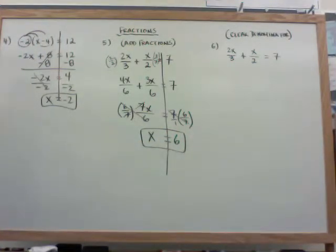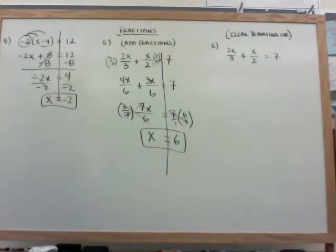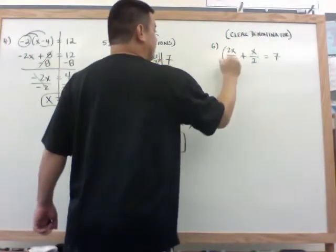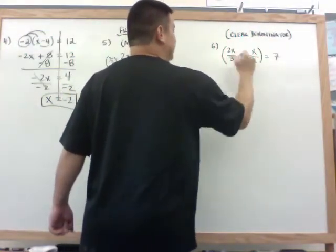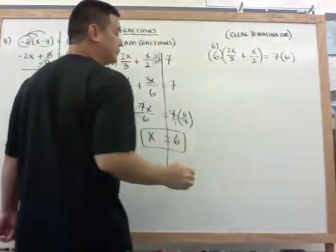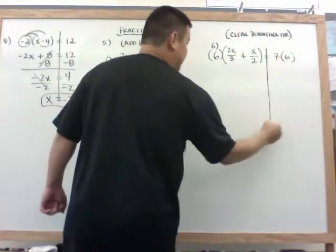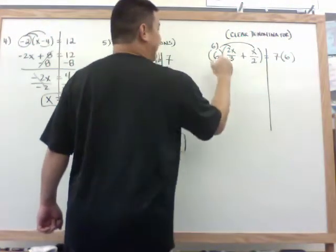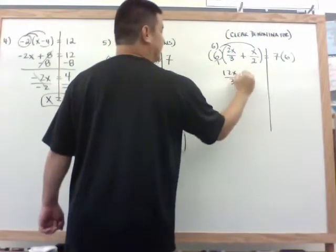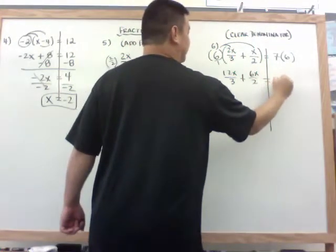The other way I can do it is by clearing the denominator. So I have the same problem, but what I want to do is find a multiple of 3 and 2, which is 6. So if I multiply both sides, if I multiply this by 6, and I multiply this one by 6 as well, I can do it that way. So when I distribute this in, I get, if I put it over 1, 12x over 3 plus 6x over 2 is equal to 42.